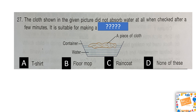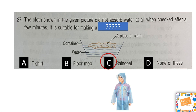The correct answer is option C, raincoat, because the property a raincoat needs to have is that it should not absorb water and should keep you dry inside.